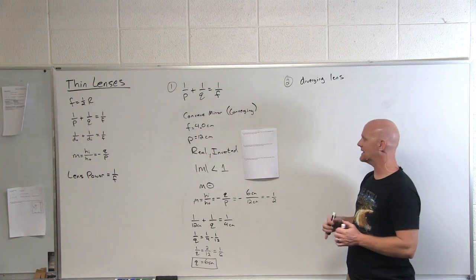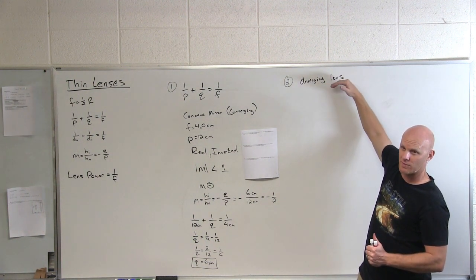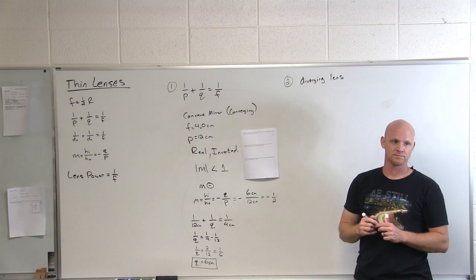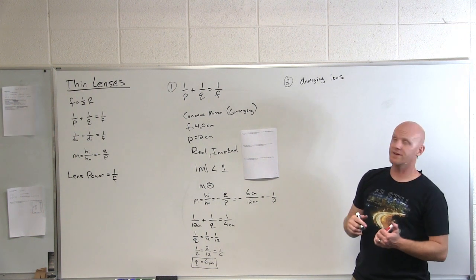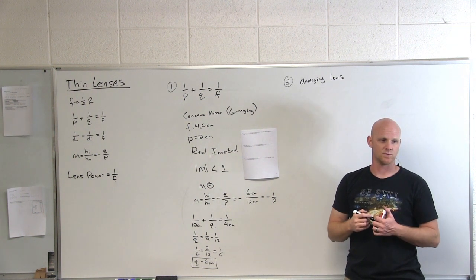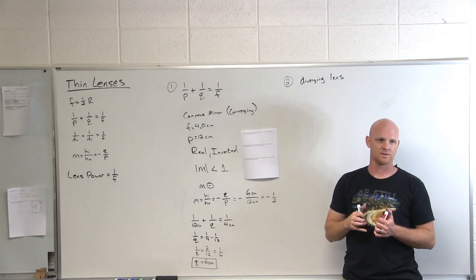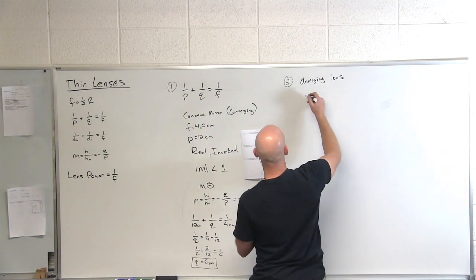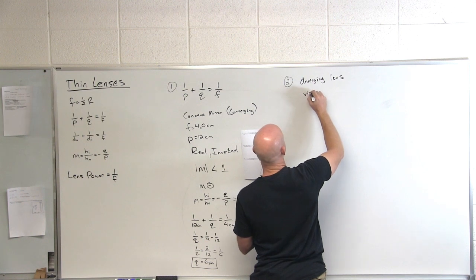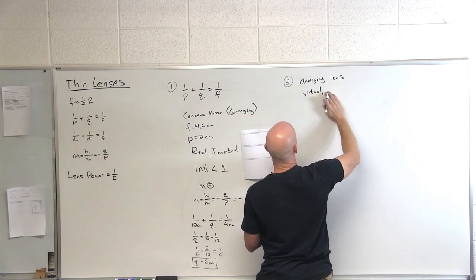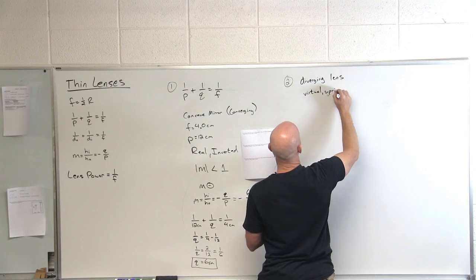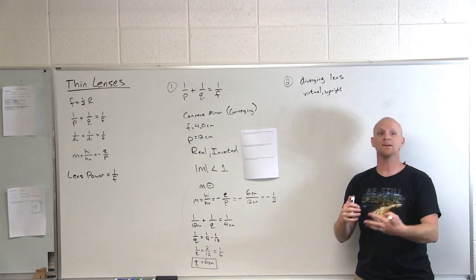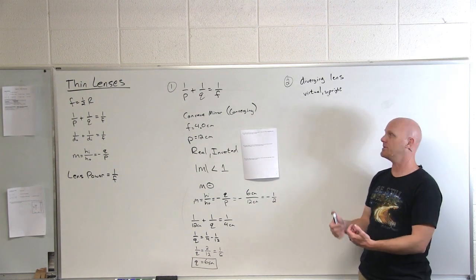Question number two, we're dealing with a diverging lens. Remind me what you know to be true about a diverging lens. Your diverging lens is a concave lens. Do we always get the same kind of image, or does it depend on where we place the object? Always the same. And what is that image always going to be? Virtual and upright. Diverging lens means the rays are always going to diverge — they never converge on the same point, so you never get a real image, only a virtual, upright image.